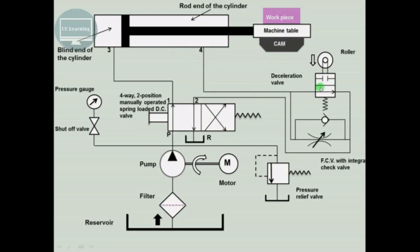This is the normally open type deceleration valve, connected in parallel with the flow control valve with integral check valve. At the end of the piston rod we have the machine table, on which the workpiece is mounted. At the bottom of the machine table there is a cam. During forward motion, the cam, machine table, and workpiece all move together in the forward direction. As soon as this cam touches the roller of the deceleration valve, it presses the roller downward and blocks the valve, giving the blocked position.